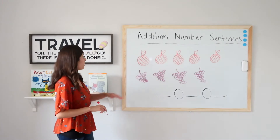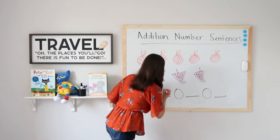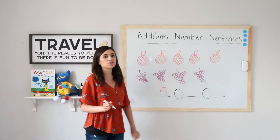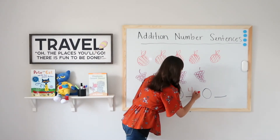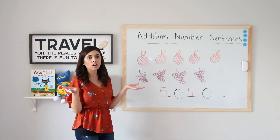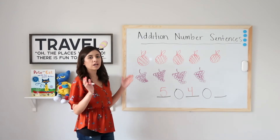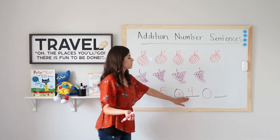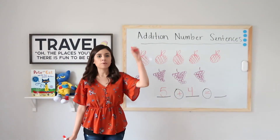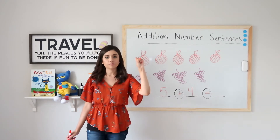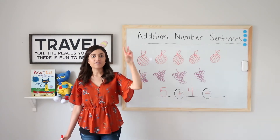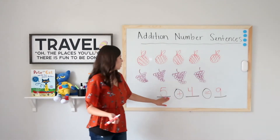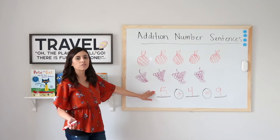Let's look at another example. I have five apples on my plate, so I write five for my first part. I also have four clusters of grapes, so I write four. I want to know how much fruit I have in all, which means I'm going to add. Holding a fist at five and jumping up four fingers: five, six, seven, eight, nine. Five plus four equals nine — this is another example of an addition number sentence.